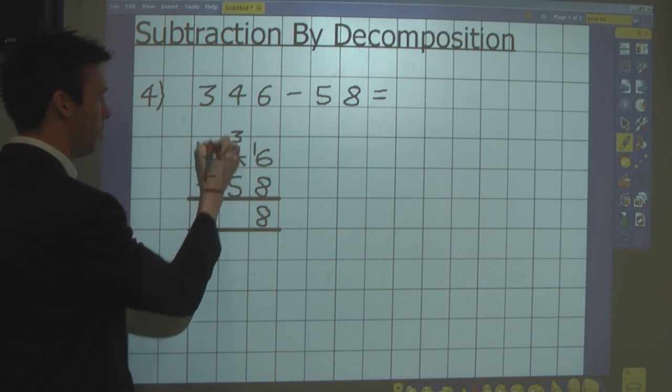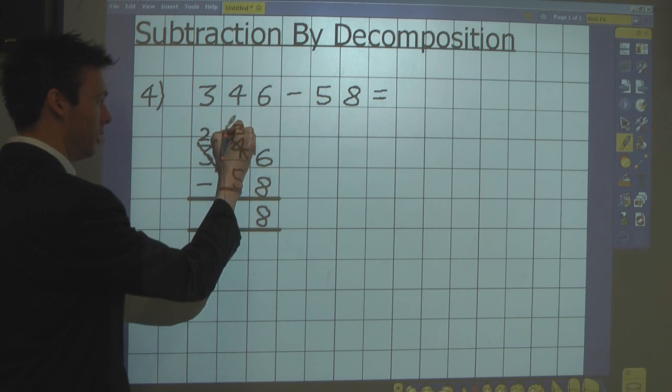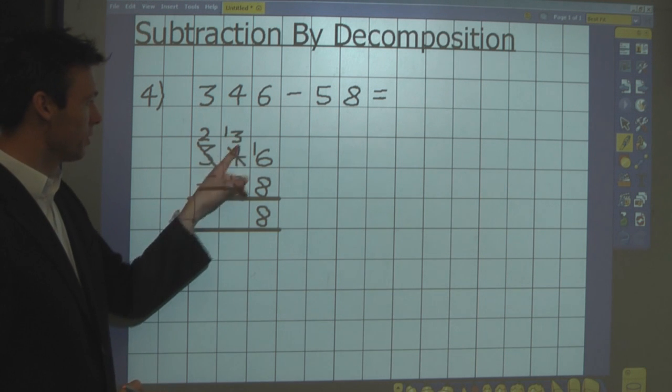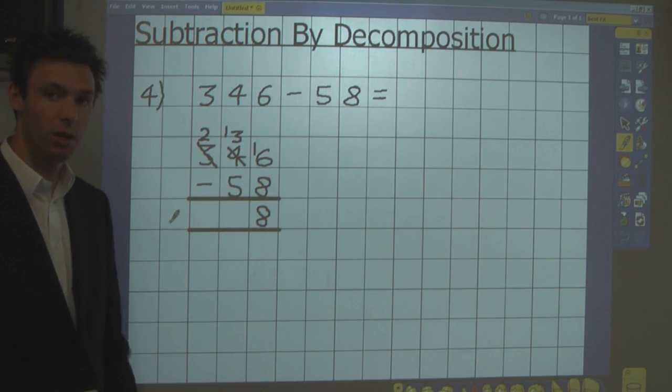So I take one of the hundreds, leaving me with 200, and exchange that for 10 tens, which gives me 13 tens in this column. In other words, 130.